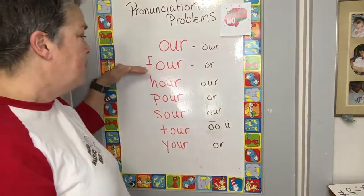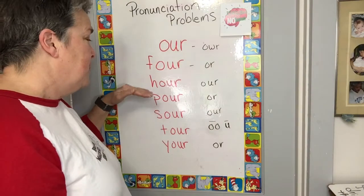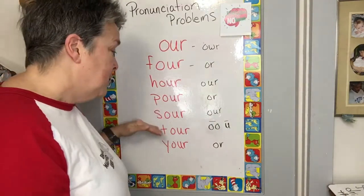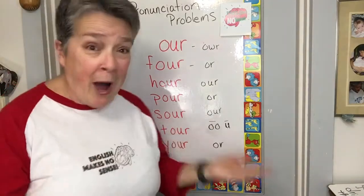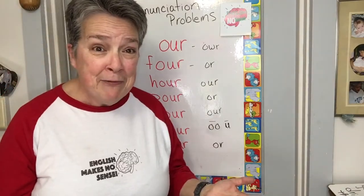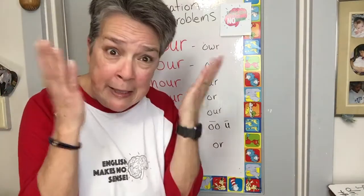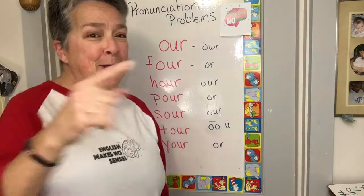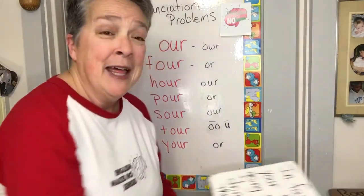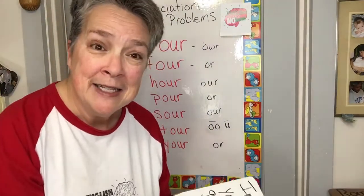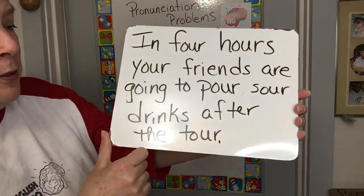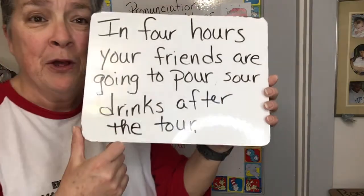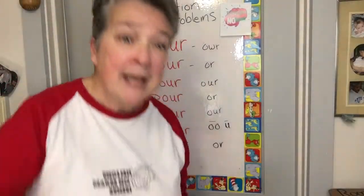Let's rewind: 'our,' 'for,' 'hour,' 'pour,' 'sour,' 'tour,' 'your.' Why do they have so many different pronunciations? I don't know, it's crazy. But now you can read, understand, and pronounce this sentence: 'In four hours, your friends are going to pour sour drinks after the tour.' What? Come on, English.